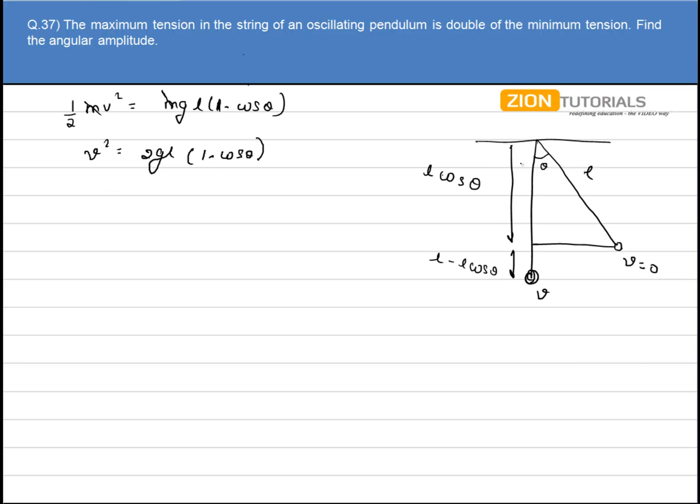Now we know that the maximum tension will be at the mean position, and the minimum tension will be at the extreme position. M G will be downward, and the centrifugal force will be also downward, equal to M V squared by L. So T max equals M G plus M V squared, that is equal to 2 G L times 1 minus cos theta.